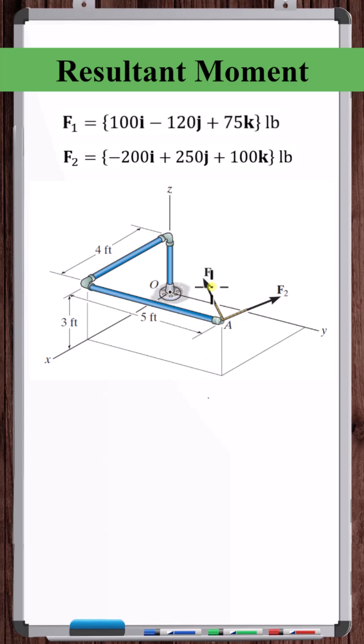Let's calculate the resultant moment of these two forces about point O. To do this, we can get the moment of each force about point O, and then sum those two moment vectors.